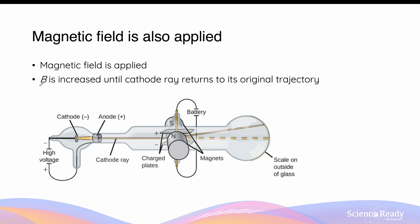Thomson slowly increased the strength of the magnetic field such that the cathode ray's trajectory returned to its original position — in other words, it would travel straight through both fields. This is only possible when the force due to the electric field, given by QE, is equal to the magnitude of the force due to the magnetic field, given by QVB sin theta. In Thomson's experiment, the angle between the cathode ray and the magnetic field is 90 degrees, which allows us to simplify this equation into E equals VB.